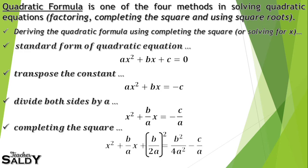Now we complete the square. We have x² + (b/a)x + (b/2a)² on the left side, and we add (b/2a)² to the right side as well. When we expand and square b/2a, that equals b²/4a².